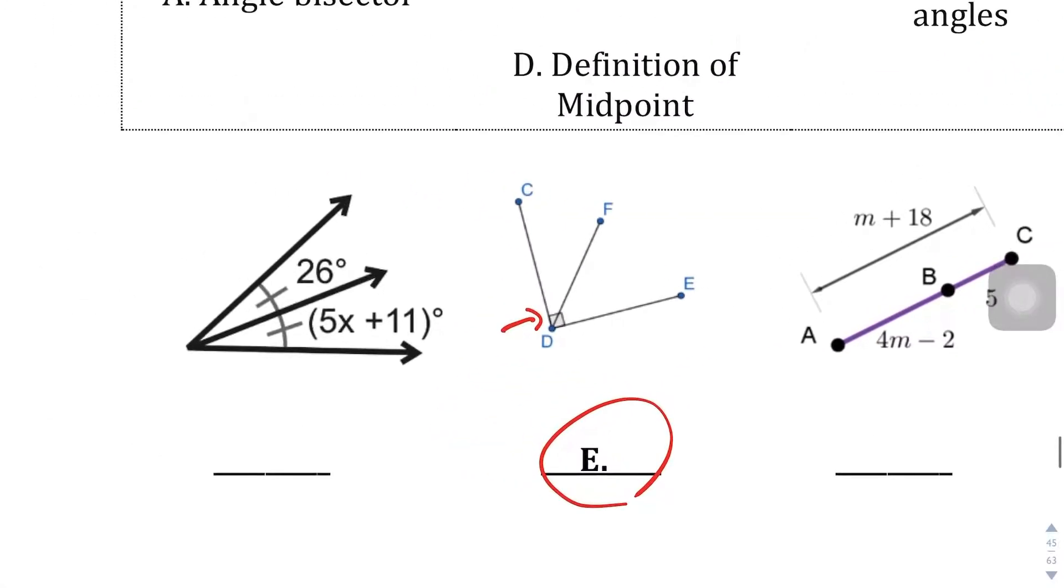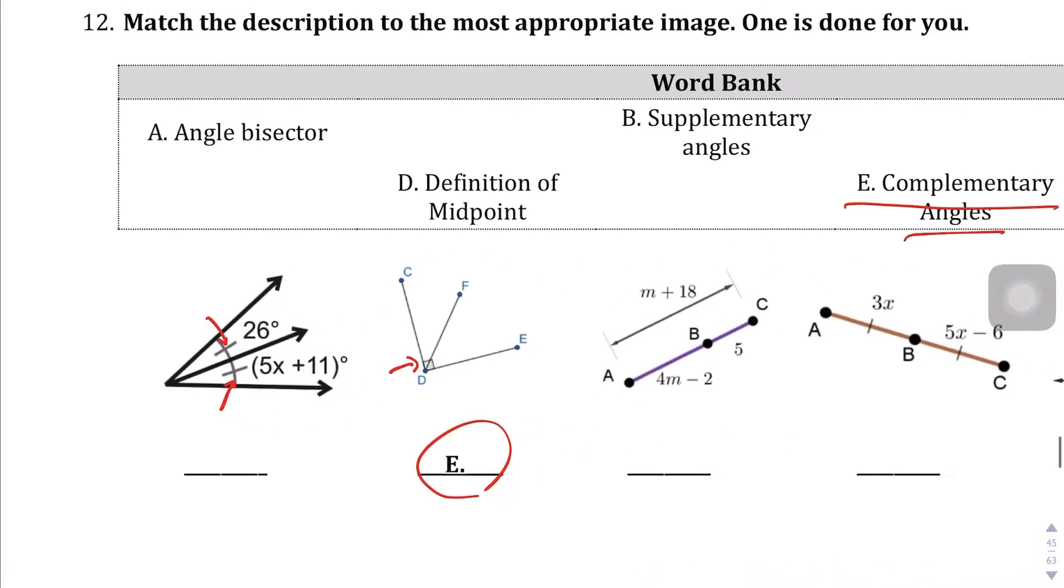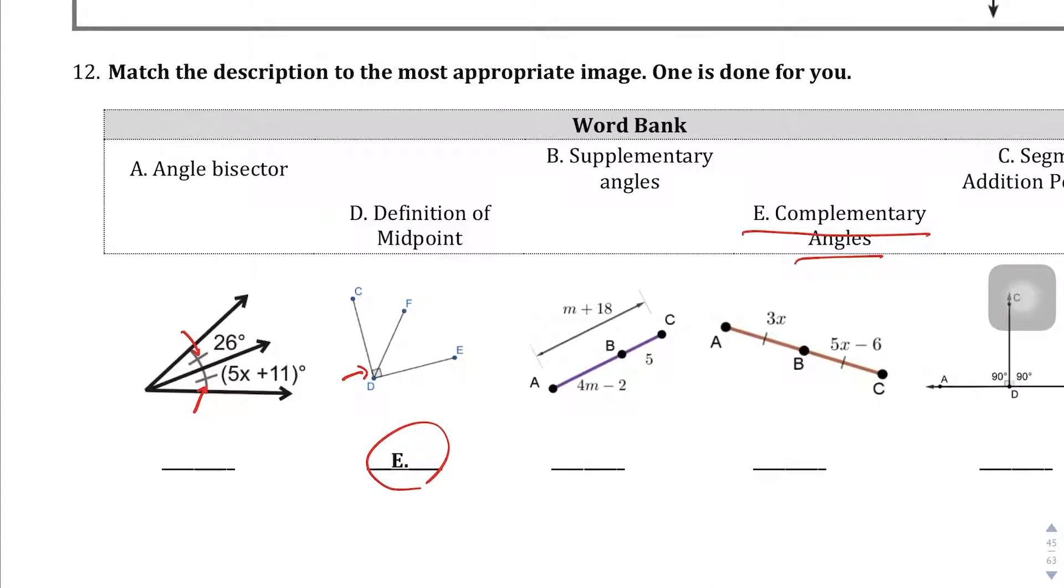Now for this first choice here, the big hint is the fact that this angle and this angle both have one hash mark going through them, which means that they're equal. So what that is, is whatever the big angle was, it's going to cut it in half exactly, and so what that is, is our angle bisector, or A, because it's bisecting that bigger angle into two equal pieces.